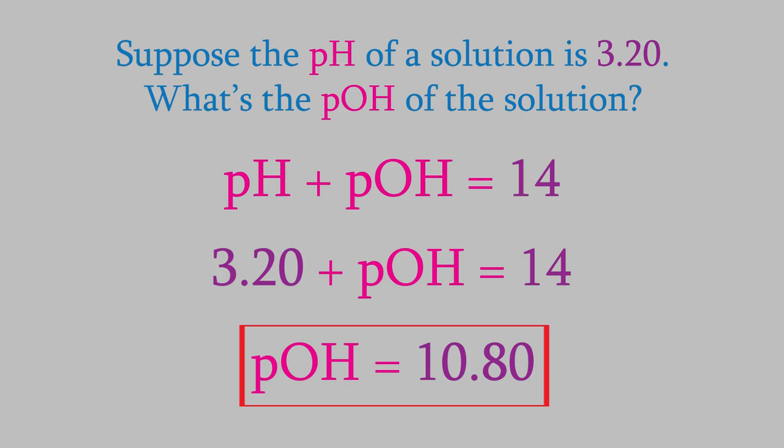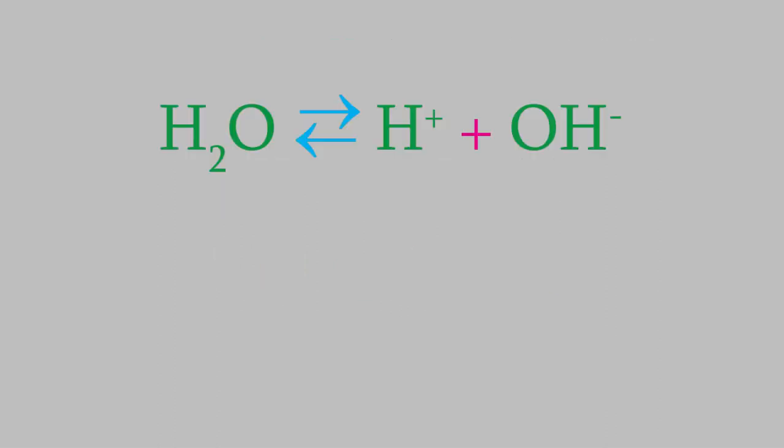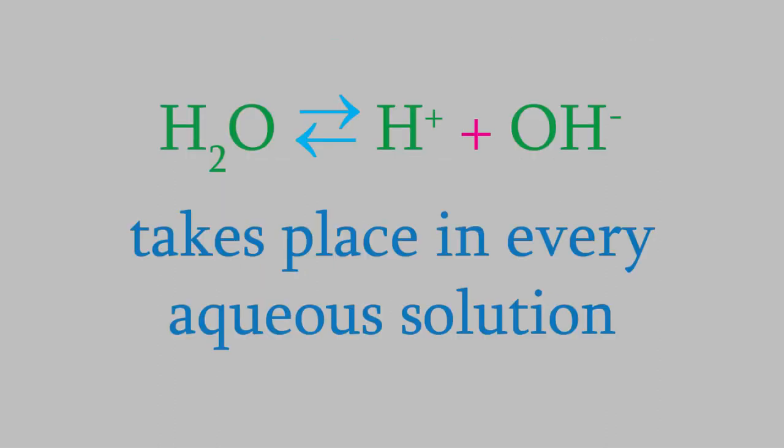You may be wondering where the hydroxide came from that allowed us to measure the pOH in a solution of acid. The trick is to remember that this is an aqueous solution. That means that this reaction is always taking place, no matter what acid or base might also be in the solution. So, there's always some hydroxide ion present, even in an acidic solution. For the same reason, there will always be some hydronium ion present, even in a solution of base. So we'll still be able to figure out a pH.